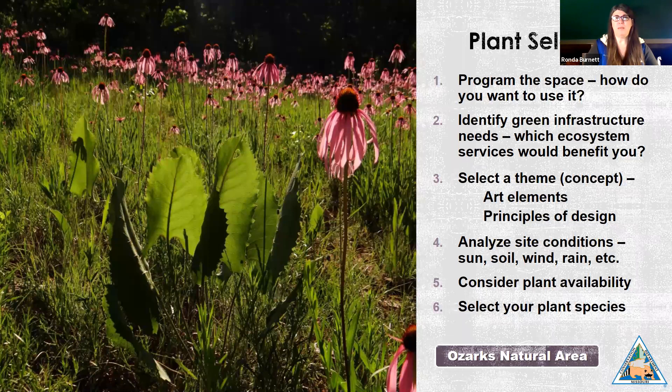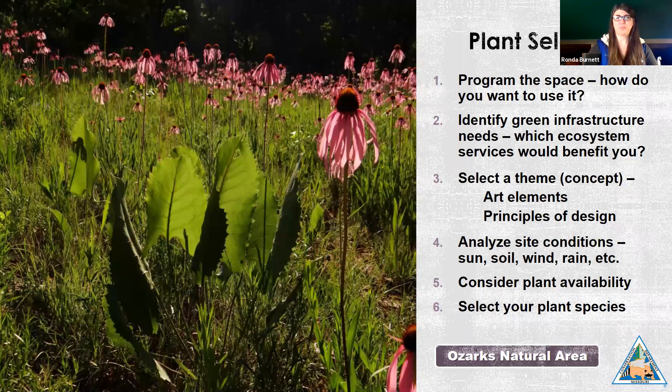The focus of my talk today is on plant selection tips. The criteria on this slide will help you select plant species. They're listed in no particular order, except for the very last one: finalizing your plant species list. You should not go into a project already knowing what plants you'll use. Instead, consider all the criteria, and once you do that, you'll end up with a list that meets your project goals. Then contact suppliers based on availability to finalize your plant list.